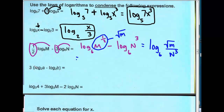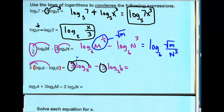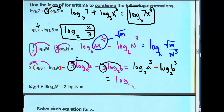Next example: notice I have a parenthesis right after that 3, and parentheses still mean distribute. So 3 gets distributed to both logarithms: 3 times log base 2 of a minus 3 log base 2 of b. Now we can condense because the 3's become the exponents: log base 2 of a cubed minus log base 2 of b cubed. I still have a minus sign, so I rewrite this one more time: log base 2 of a cubed divided by b cubed.